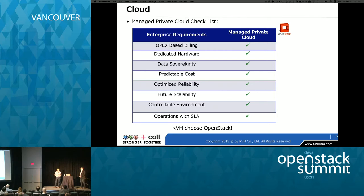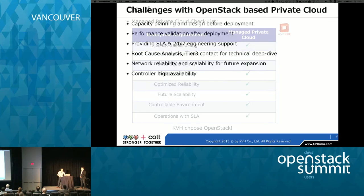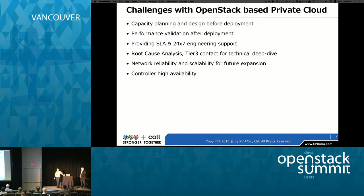We have a checklist of what we can provide to enterprises as our managed private cloud solution, and we chose OpenStack as the platform. As a service provider, we can have a lot of choices with OpenStack — that's the biggest advantage. However, there are challenges before going to production: capacity planning, performance validation after deployment, and 24x7 support to customers, along with root cause analysis and troubleshooting.